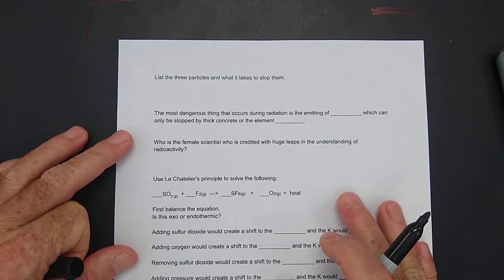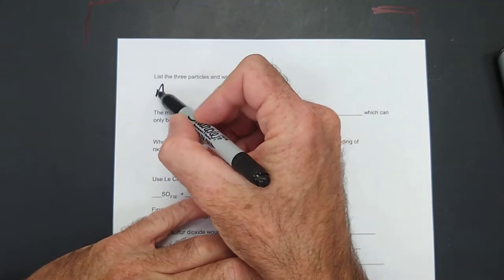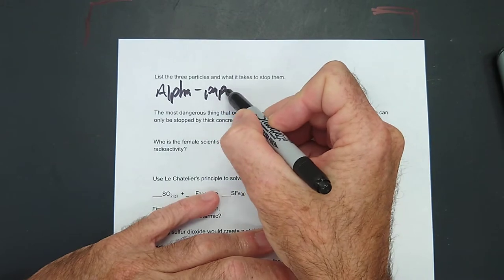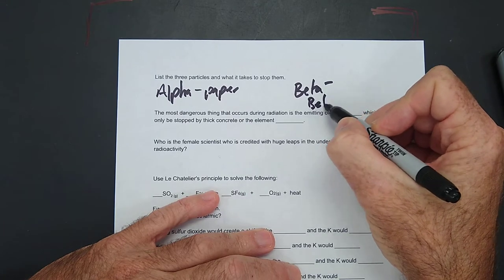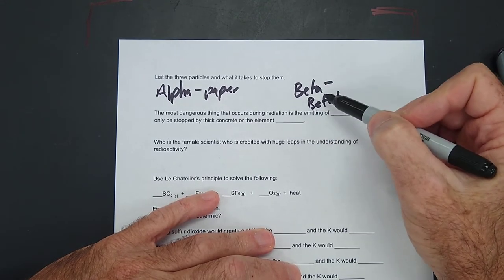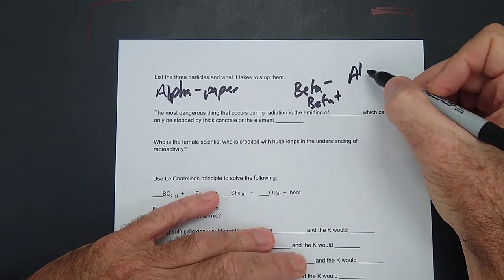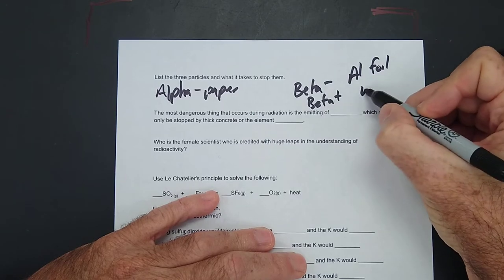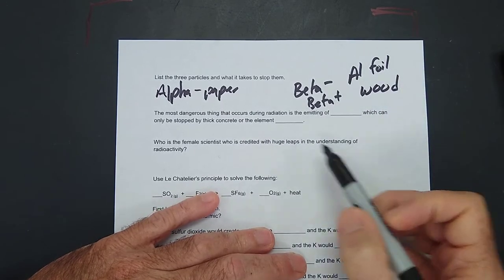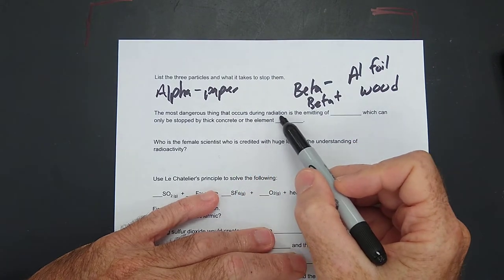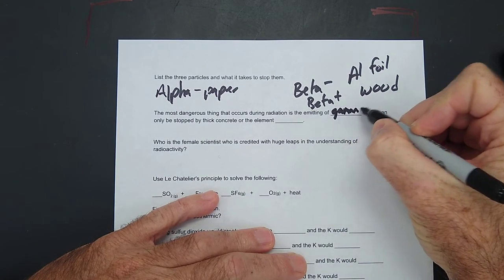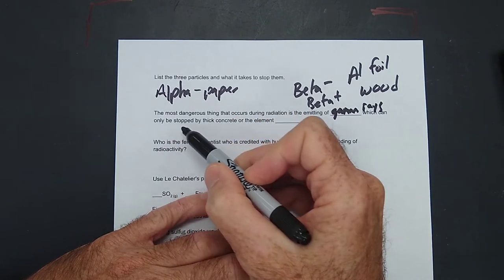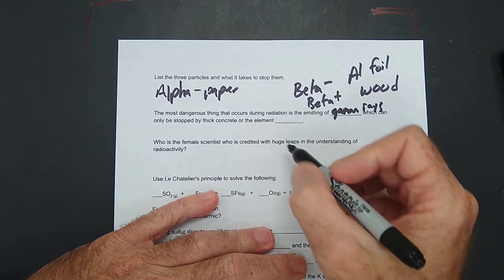Here we go. List the three particles and what it takes to stop them. Alpha can be stopped by paper. And then beta negative and beta positive, which this is an electron, this is a positron, they can be stopped by aluminum foil or wood. Okay. The most dangerous thing that occurs during radiation is the emitting of gamma rays, which can only be stopped by thick concrete or the element lead.